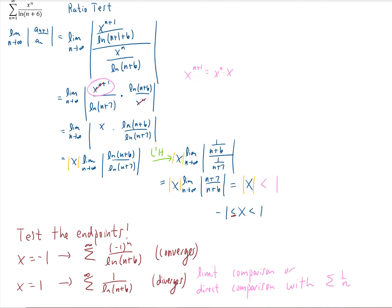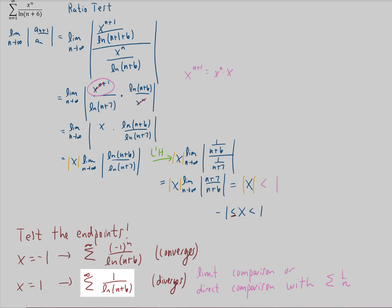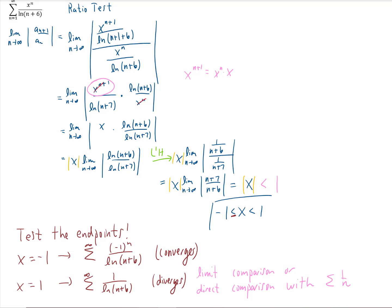We could do either a limit comparison test or a direct comparison test with the sum of one over n. Now the sum one over n does diverge, it's the harmonic series. We could either make an argument by direct comparison that this series is greater than the harmonic series above certain values of n, or we could do a limit comparison test to show the same thing, that this series is going to be greater than the harmonic series. Since the harmonic series diverges, then this series diverges. And our interval of convergence is now complete. We're going to include negative one in that interval, but not positive one.